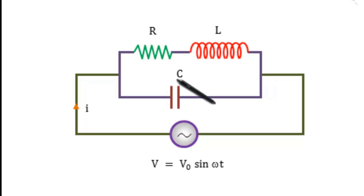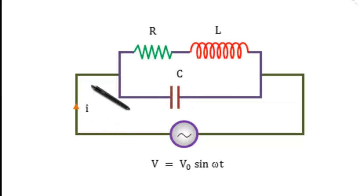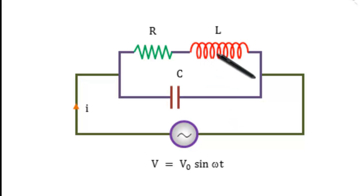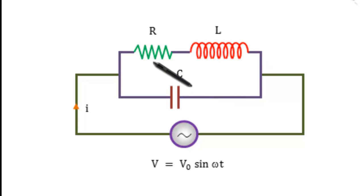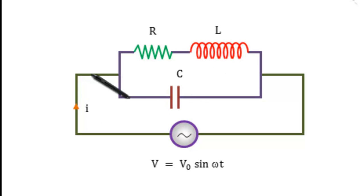Let the instantaneous value of potential be V and the corresponding current will be I. The current through the inductance is IL and the current through the capacitor is IC. These currents IL and IC will be almost in the opposite phase if R is very very small. The total current I is equal to IL plus IC, which splits up here.